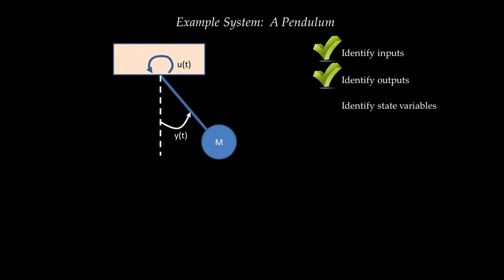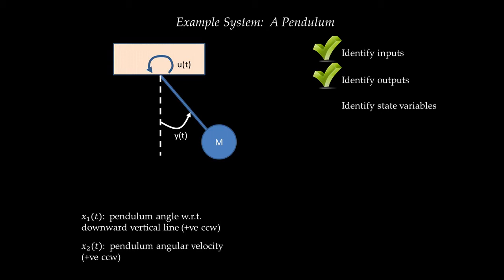The third step is to identify state variables. This is a rotational mechanical system that stores two distinct kinds of energy. First, as the mass of the pendulum rotates, it rises upward and stores potential energy. Second, as the mass moves, it stores kinetic energy. The potential energy is a function of the pendulum's angle relative to the vertical, and the kinetic energy is a function of angular velocity. So the state variables are X1, the angular displacement of the pendulum relative to the downward vertical (positive counterclockwise), and X2, the angular velocity of the pendulum (also positive counterclockwise).